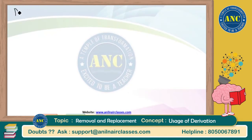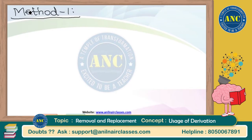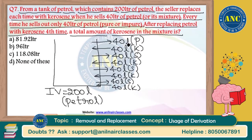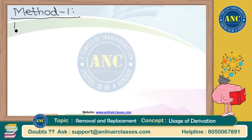I'll teach what I know so that you will follow the same method and never fumble in solving this kind of question, which repeatedly comes in examination. Method one: always work with the parameter which is decreasing. Taking petrol outside the vessel means the petrol parameter should decrease, so I should work with petrol.